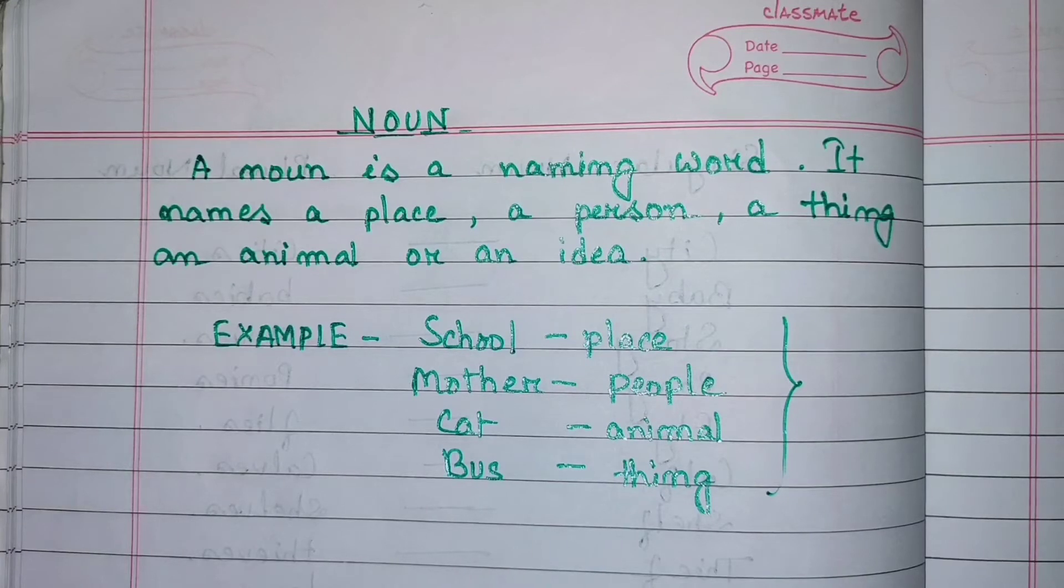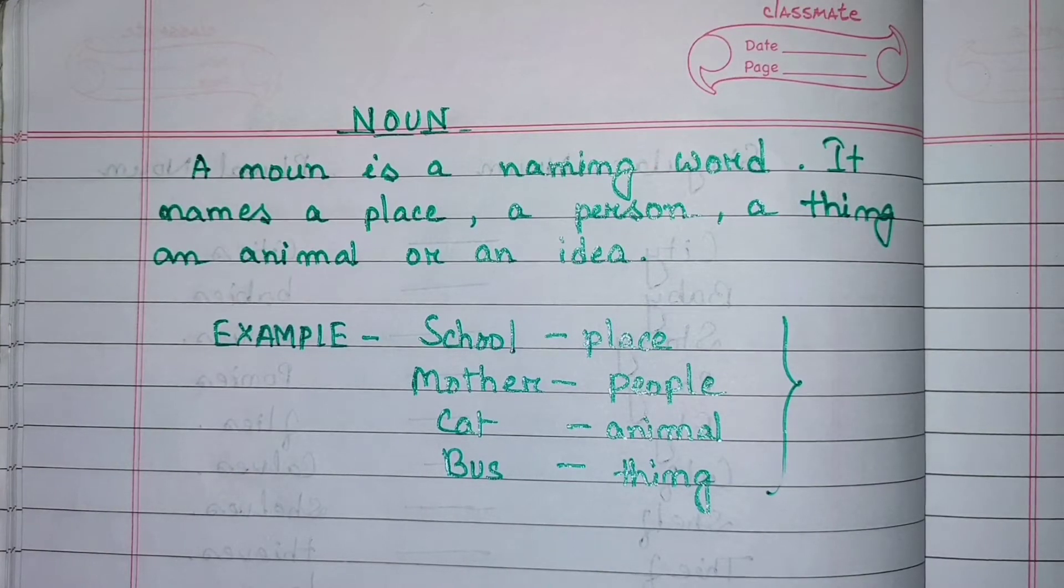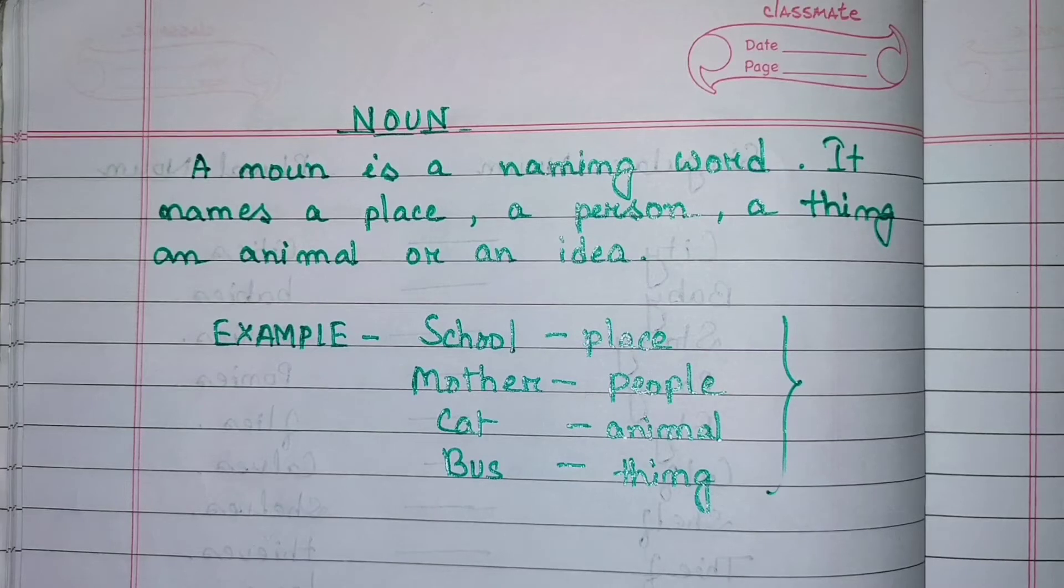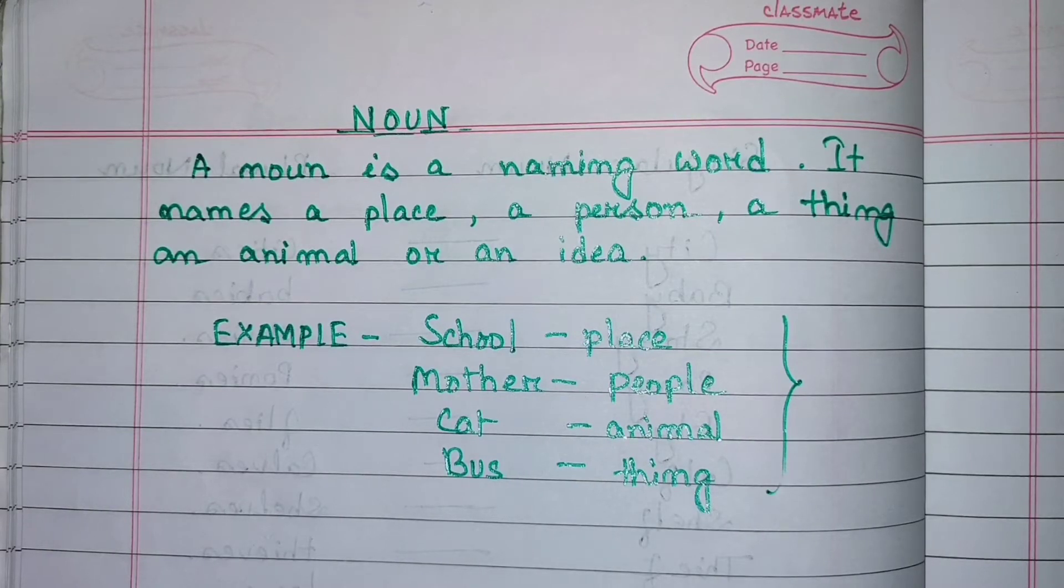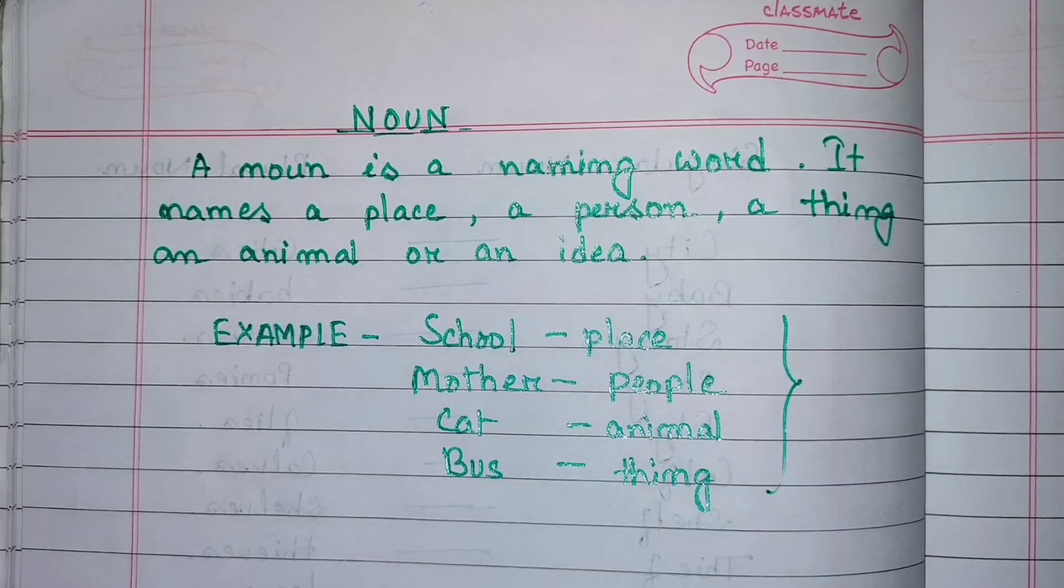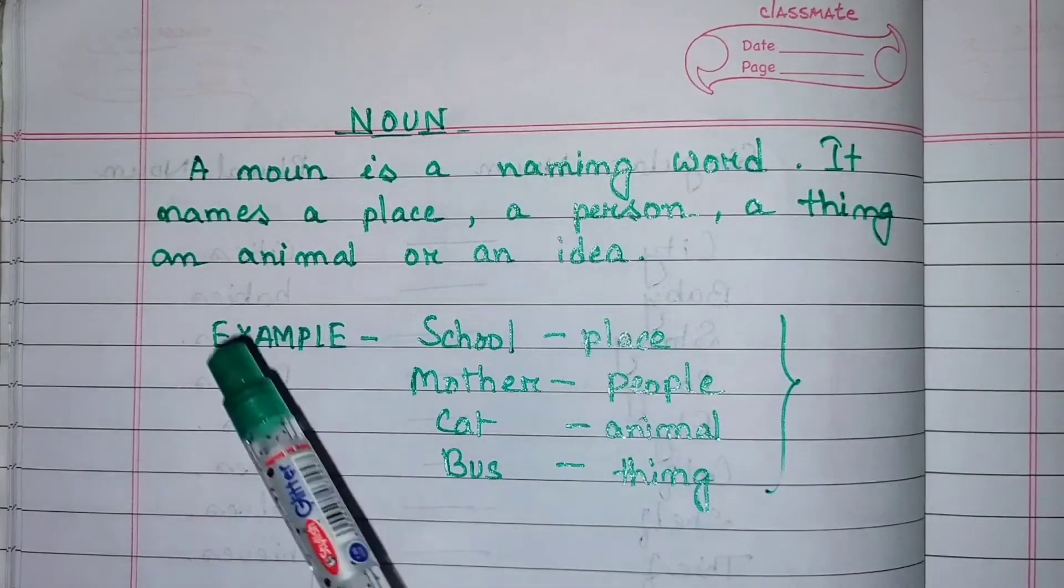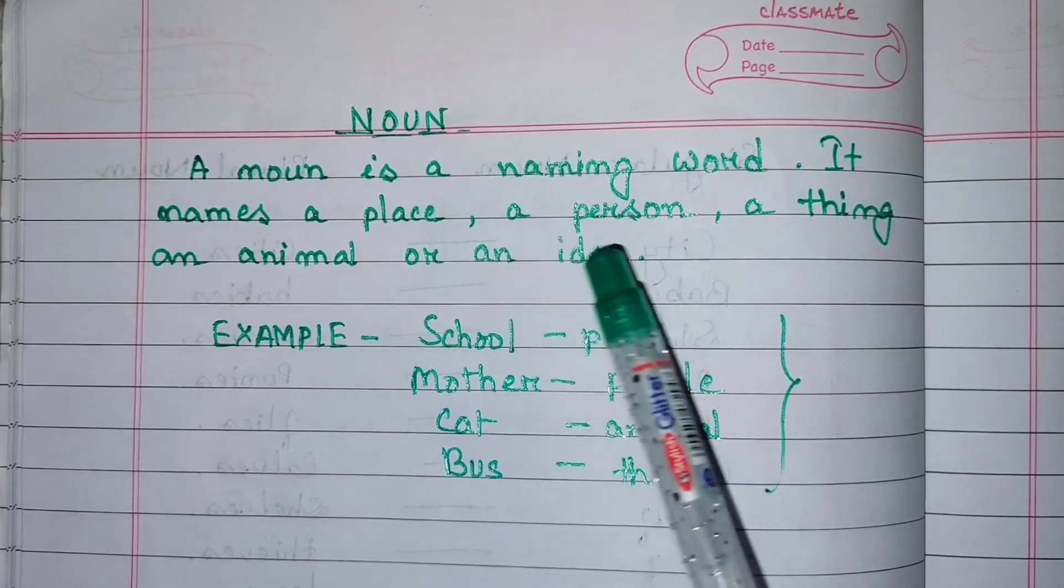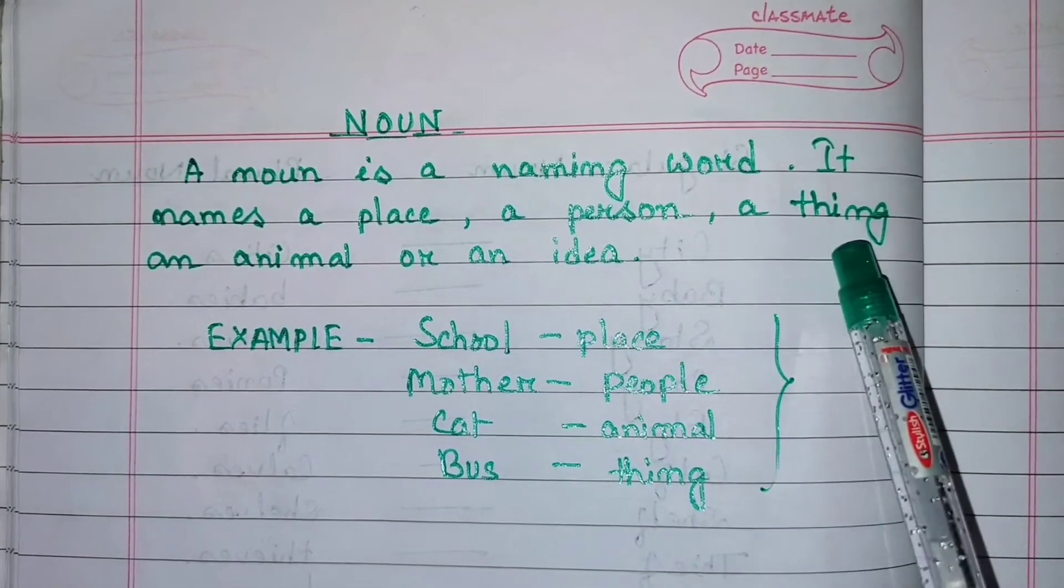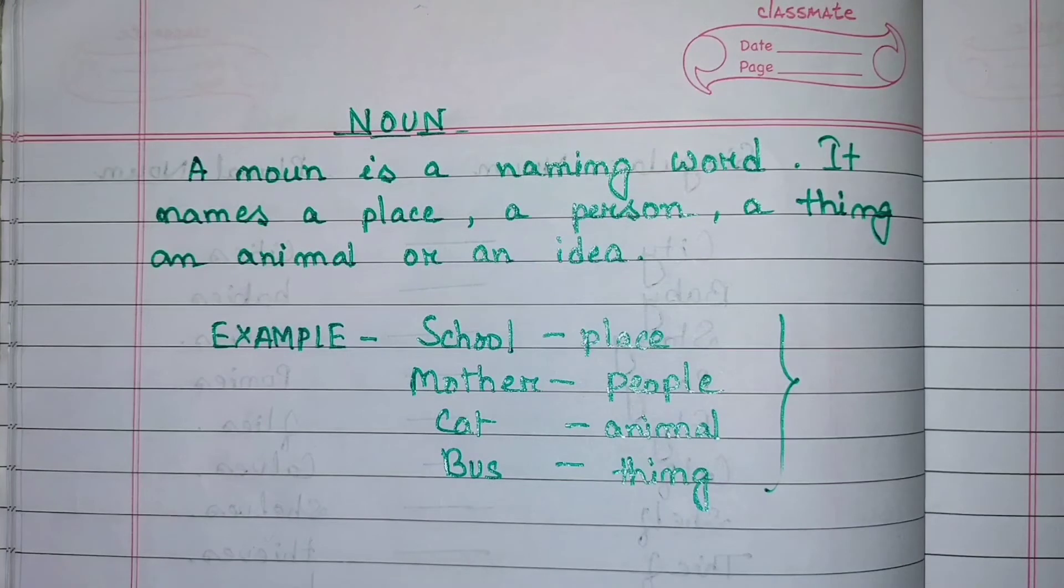So in your previous class I already discussed about noun, right? So what is a noun? A noun is a naming word. It names a place, a person, a thing, an animal or an idea.